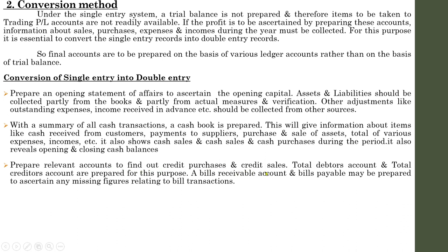Once the cash book is prepared, the next important ledger accounts are the total debtors account and total creditors account. In the trading profit and loss account, the main important aspect is how much was the total purchases and total sales made during the year. Details of credit purchases and credit sales can be found with the help of the debtors account and creditors account. From the debtors account we get details of credit sales; from the creditors account we identify credit purchases.